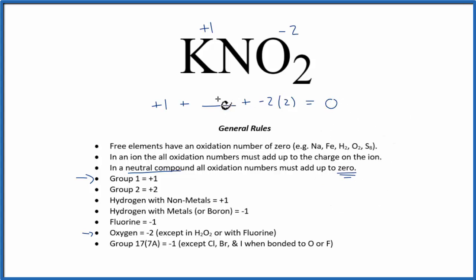For this to be true, the oxidation number on the nitrogen needs to be a positive three. Plus one and plus three, that's four, plus minus four gives us zero. So the oxidation number on the nitrogen in KNO2 is plus three.